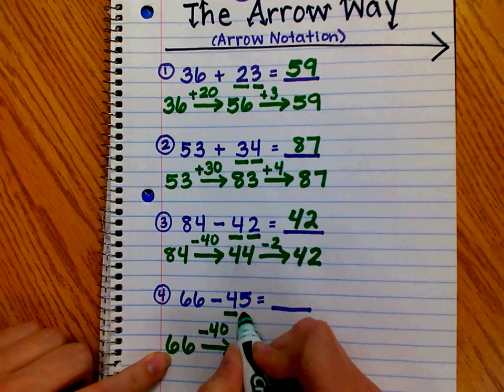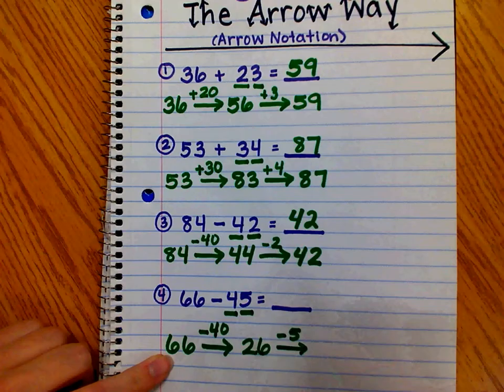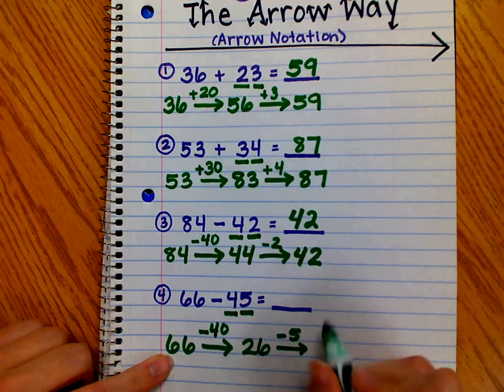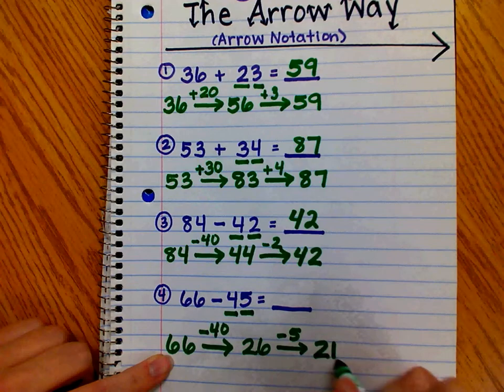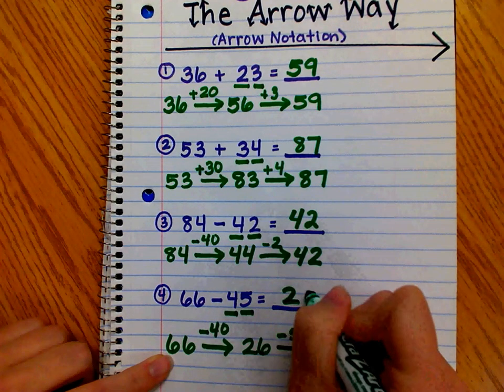Now, we have to subtract our ones. So, 26 minus 5. 6 ones minus 5 ones is 1 one. We have 2 tens. So, 66 minus 45 equals 21.